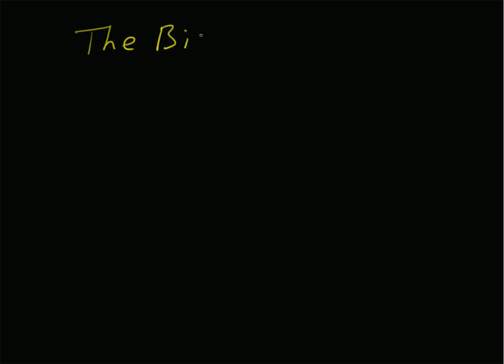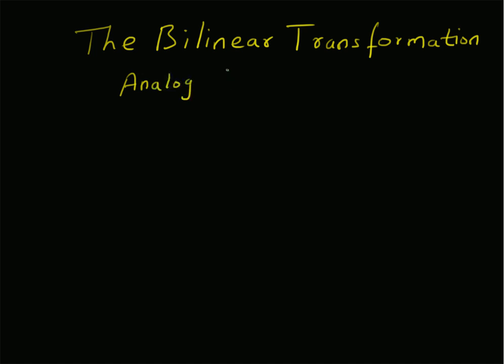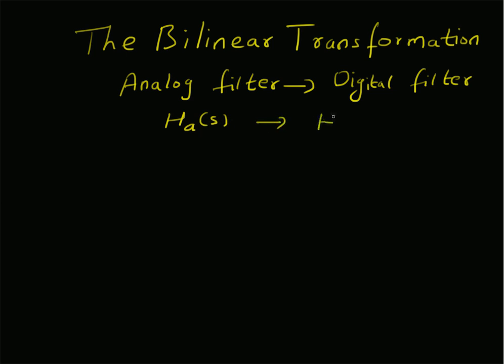Hello, welcome. In this short video, let us look at the bilinear transformation for the design of a digital filter from a given analog filter. Given an analog filter, we want to convert it into a digital filter using this transformation — that is, converting H_a(s), the transfer function of an analog filter, to H(z), the transfer function of a digital filter.